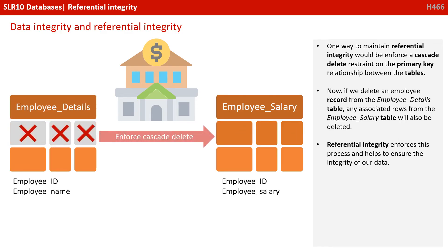One way to maintain referential integrity would be to enforce a cascade delete constraint on the primary key relationship between the tables. Now, if we delete an employee record from the Employee Details table, any associated rows from the Employee Salary table will also be deleted. Referential integrity enforces this process and helps to ensure the integrity of our data.